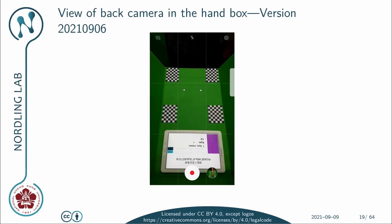Here you can see the view of the back camera in the hand box. We are clearly filming the tablet, which provides information about the experiment and is also used to sync the cameras. We have a timer that will be shown when it's actually running and blinking black squares that are easy to recognize.